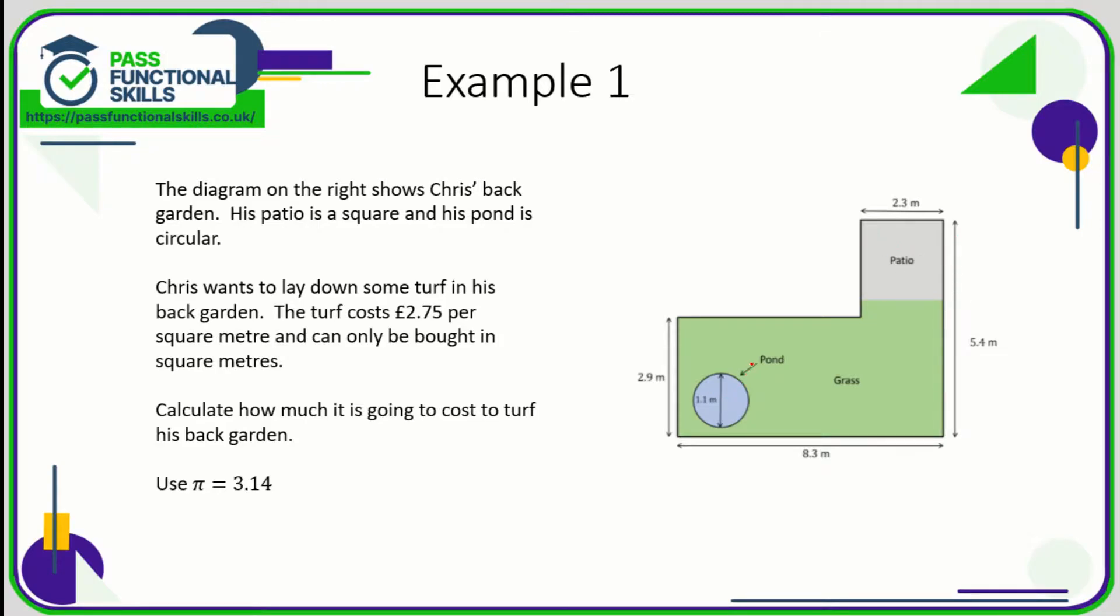Now the area of the garden is a compound shape, so I'm going to divide it into two rectangles. So this rectangle here is going to have an area of 2.3 multiplied by 5.4, which is 12.42 square meters.